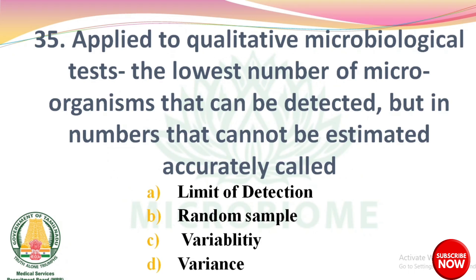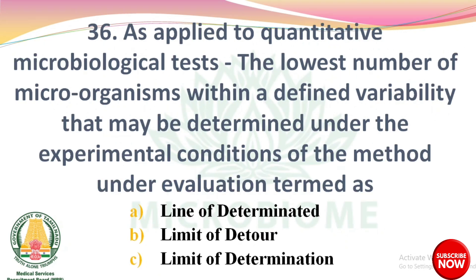Next question: As applied to qualitative microbiological test, the lowest number of microorganisms within a defined variability that may be determined under the experimental conditions of the method — this evaluation term is — options: line of determination, limit of detour, limit of determination. The right answer is option C: limit of determination.